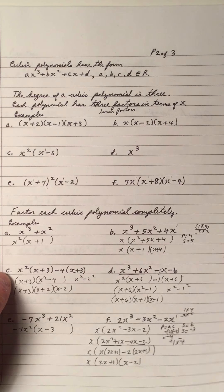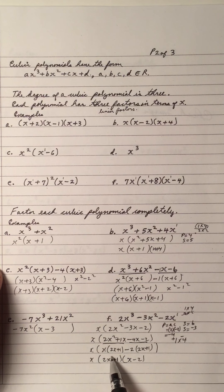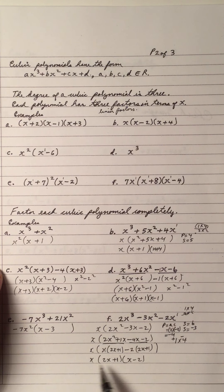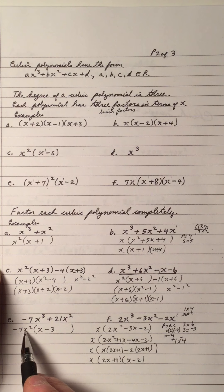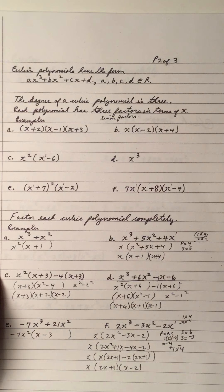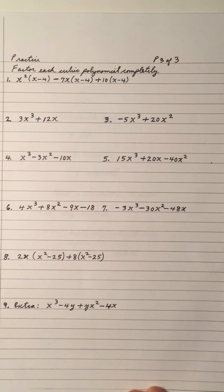Notice we have three factors: one linear there, one linear there — that's degree 1, so 1, 2, 3: three linear factors. There's one linear factor here but there are two x's as x times x making it cubic. A cubic has three factors.